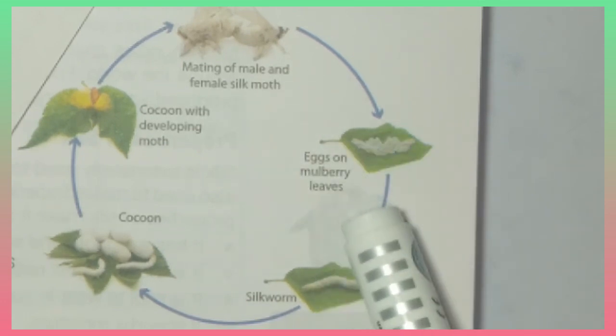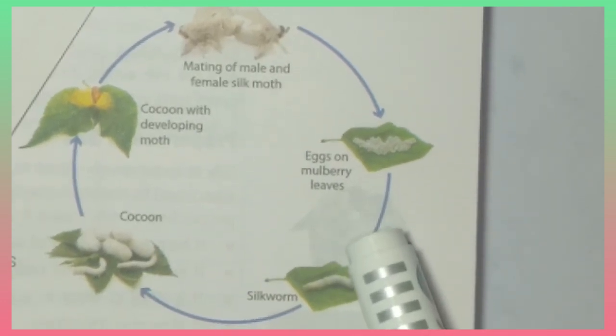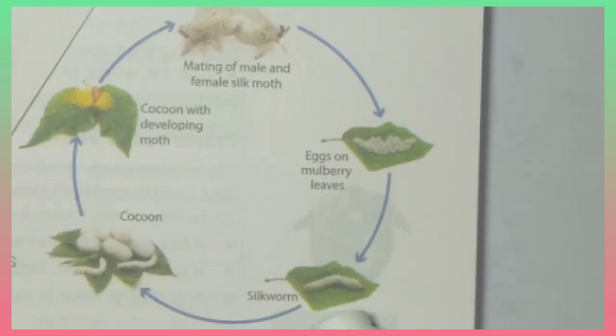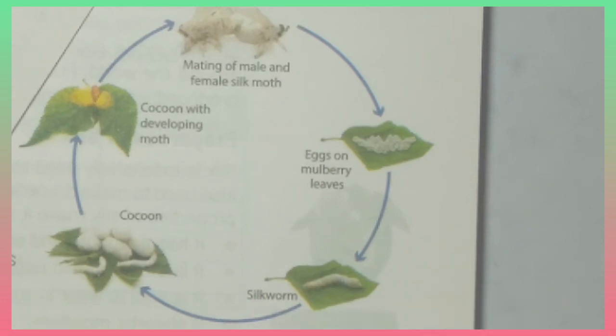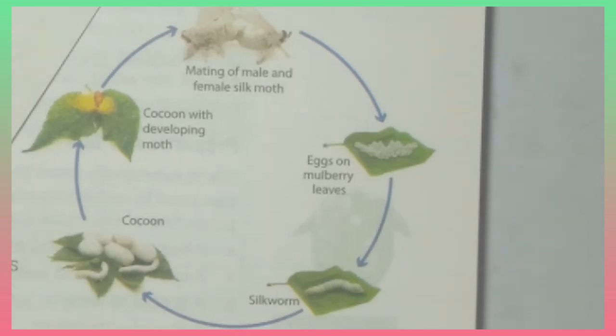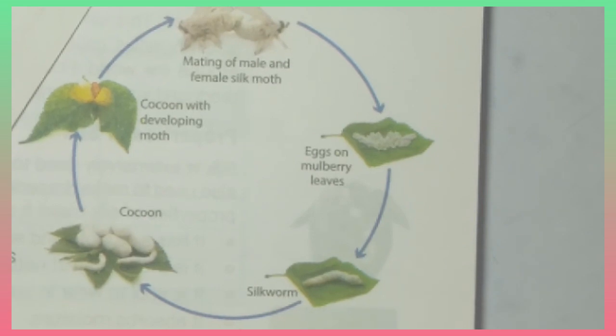After about 20 days, egg hatch into larva. So the second step is larva. When the egg hatch, we observe a caterpillar come out. It is also called larva or silkworm. This larva feed on the mulberry leaves and grow in size. This stage continues for 27 days. Caterpillar also shed their skin a number of times.